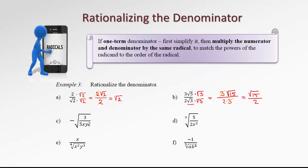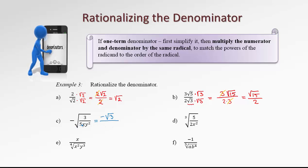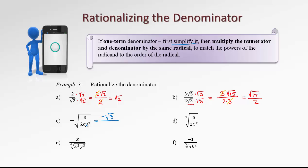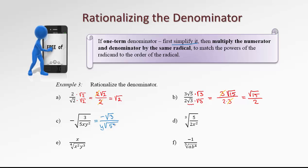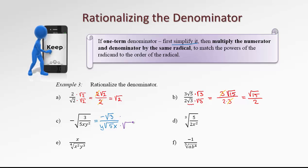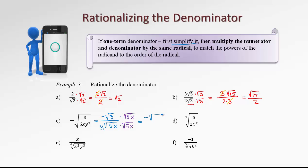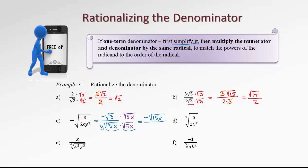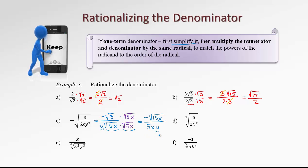Next, let's look at example C. We have negative root of 3 in the numerator over root of 5xy squared. Since we're supposed to simplify the denominator first, let's pull this y out of the radical. So we can write y root of 5x only. Then, to get rid of this root 5x, let's multiply the top and the bottom by root 5x. That gives us negative root of 15x in the numerator. In the denominator, when we multiply the two roots, the root will disappear and we end up with 5x times y — so 5xy. That's our final answer.